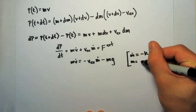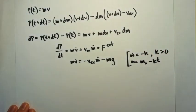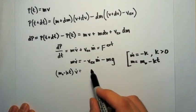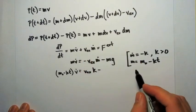We're going to make the substitution for m dot, we're just going to say is minus k, where k is a positive constant, and m, the mass as a function of time, is the initial mass minus kt.